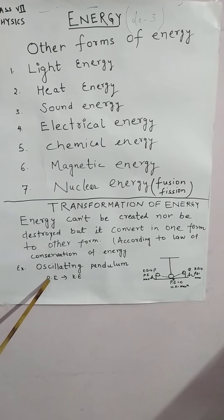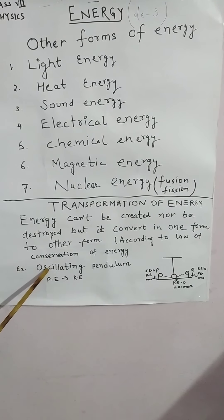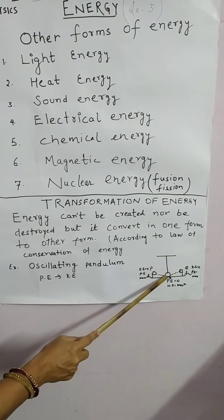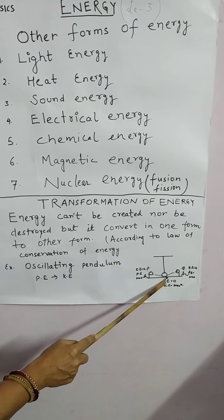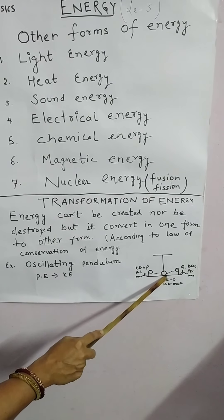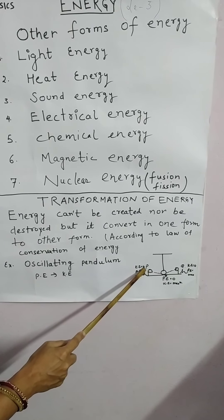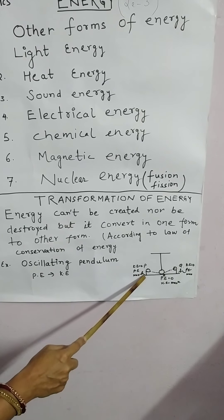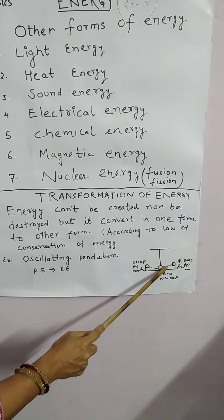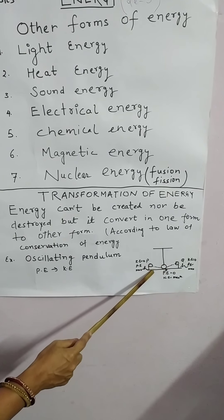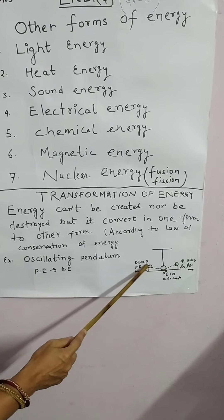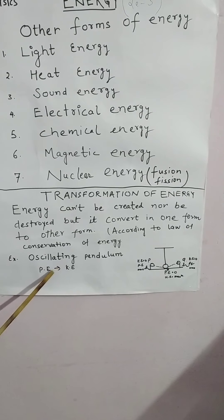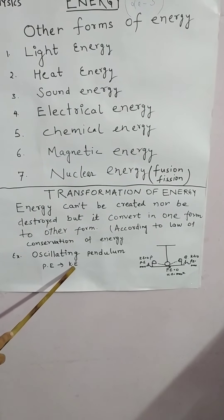Only potential energy is converted into kinetic energy and vice versa. Example of an oscillating pendulum: when a pendulum is suspended through a string, the potential energy is zero at the mean point. When it moves to a height, kinetic energy is zero and potential energy is maximum. When one oscillation is completed, potential energy converts into kinetic energy and kinetic energy converts back into potential energy.